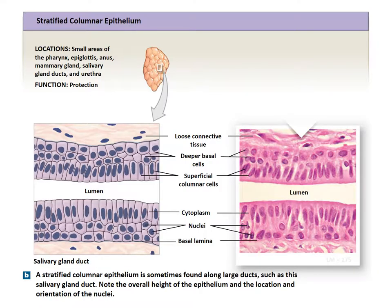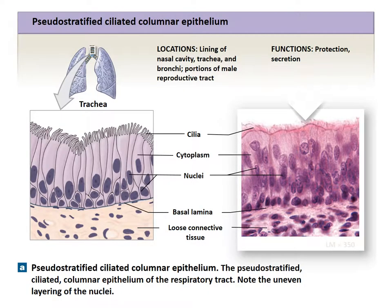Next will be stratified columnar, which is also very rare. It provides protection and some secretory functions in portions of the pharynx, urethra, anus, and some ducts. There are a few other types slightly different from the major types, the first being pseudostratified columnar. Pseudostratified columnar is similar to stratified columnar; however, it has a very disorganized appearance, and the nuclei tend to be in disorder as opposed to the more uniform organization of a stratified columnar structure.